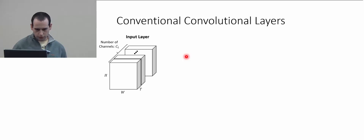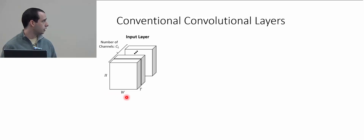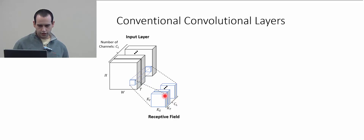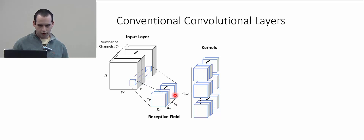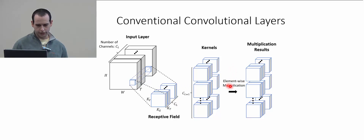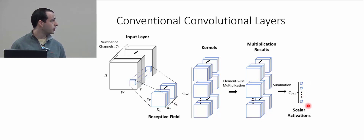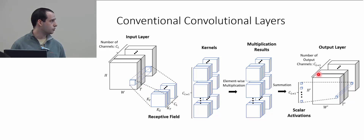With conventional convolutions, we start with an input layer with some height, width, time dimension, and a number of channels C_L. We have a receptive field and a set of learned kernels. We multiply these kernels by the receptive field element-wise and sum to get scalar activations, which form the output layer with a new height, width, time dimension, and output channels.